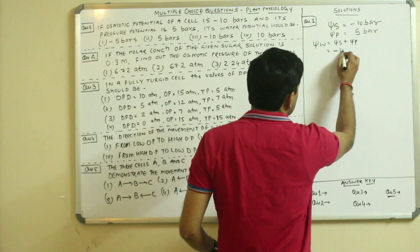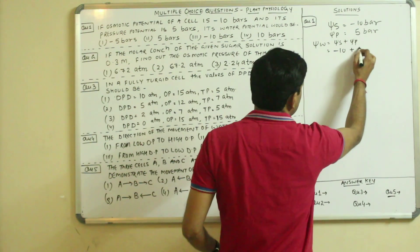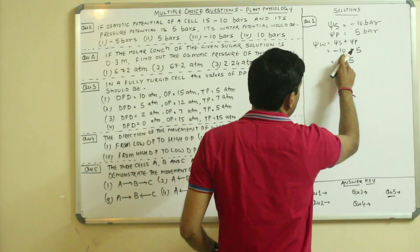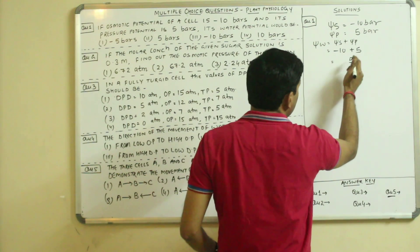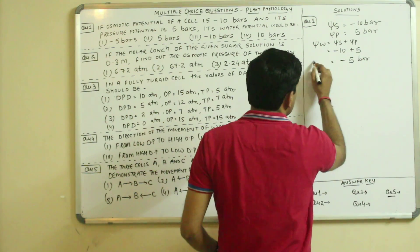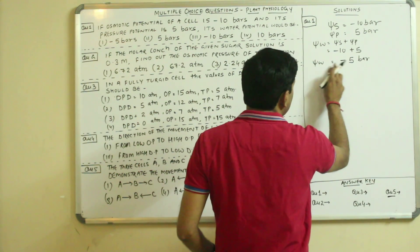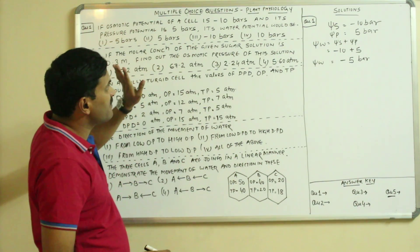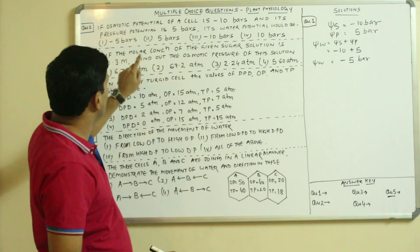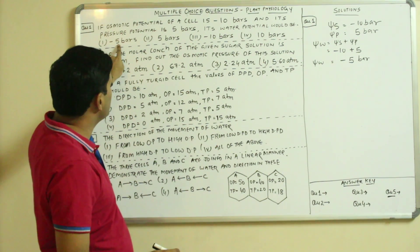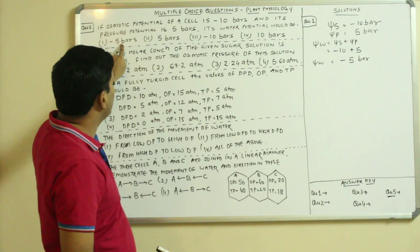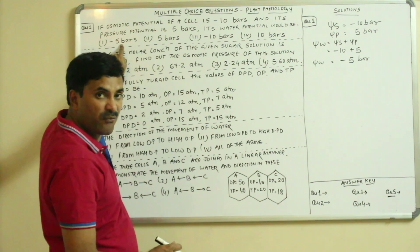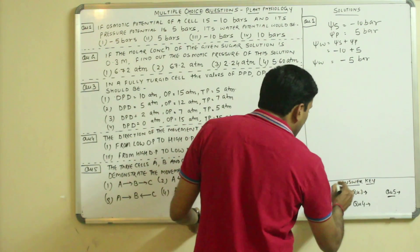Substituting the values: ψs is minus 10 plus ψp is 5, so minus 10 plus 5. The bigger figure carries the negative sign, so ψw = minus 5 bar. Checking the options, the first option gives minus 5 bar, so the correct answer to question 1 is minus 5 bar — answer key: option 1.